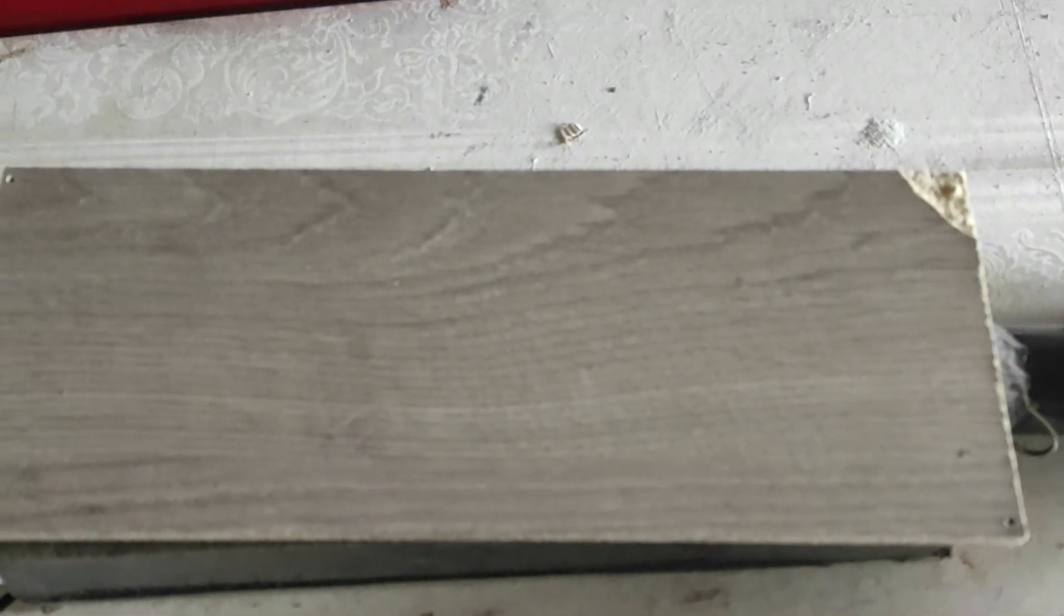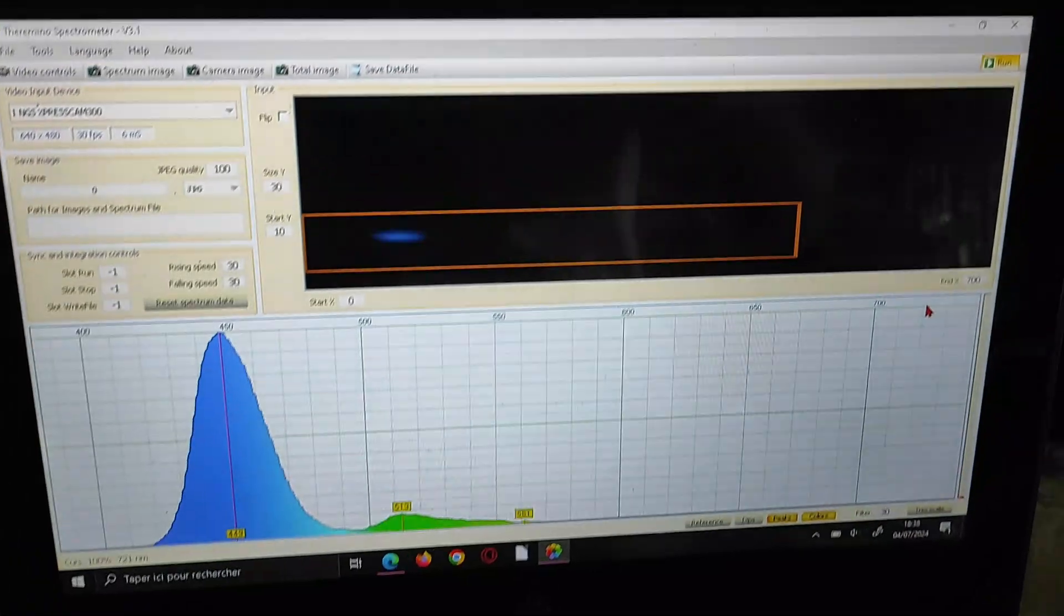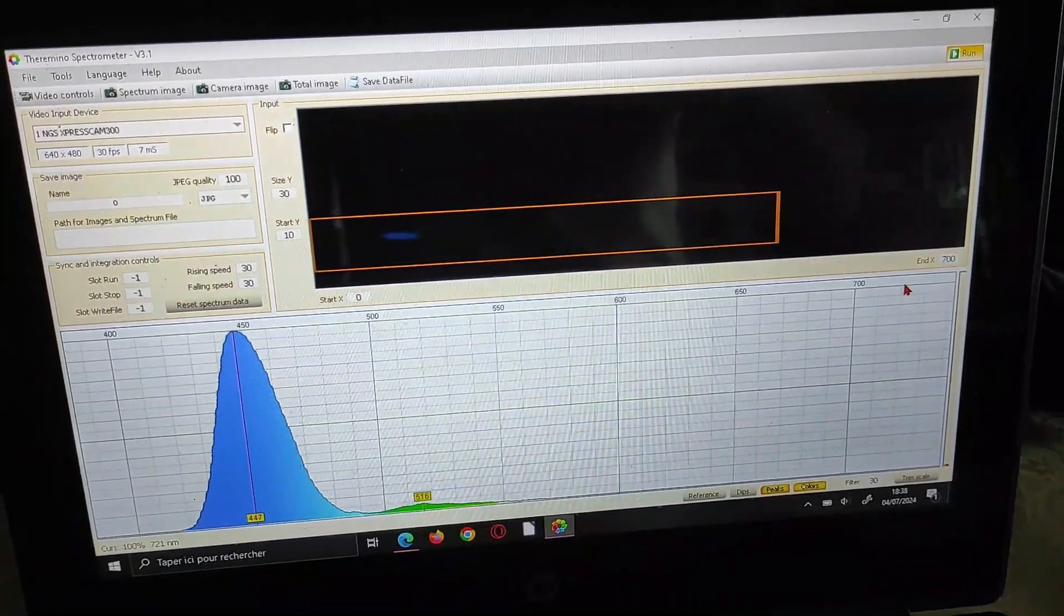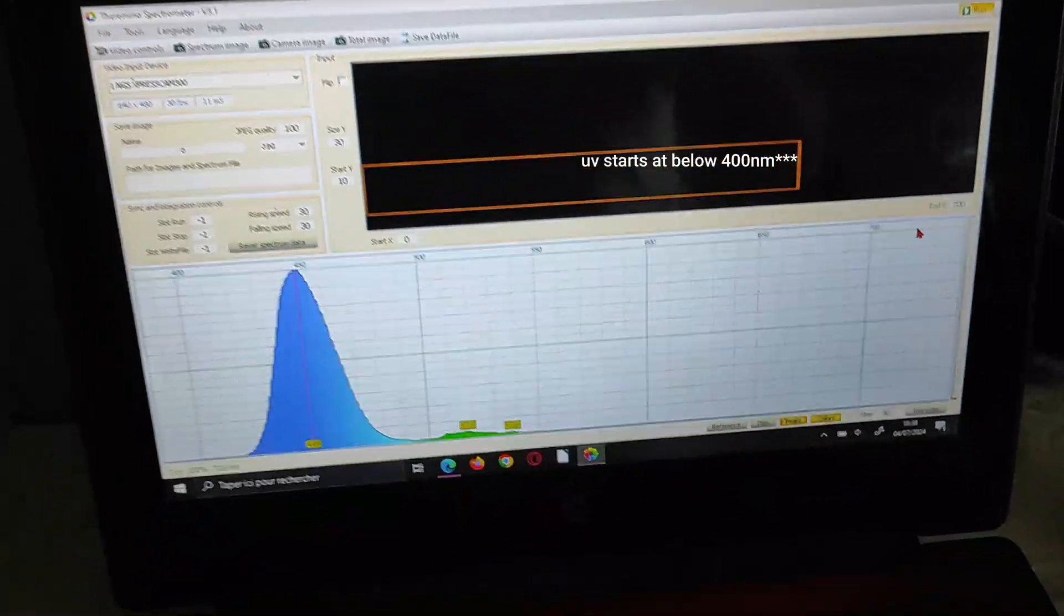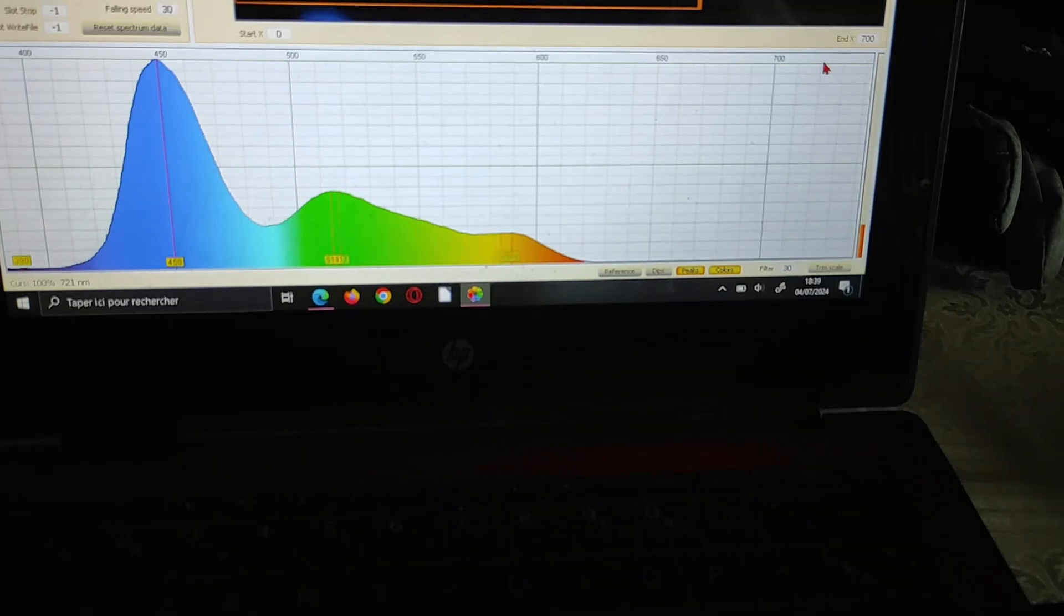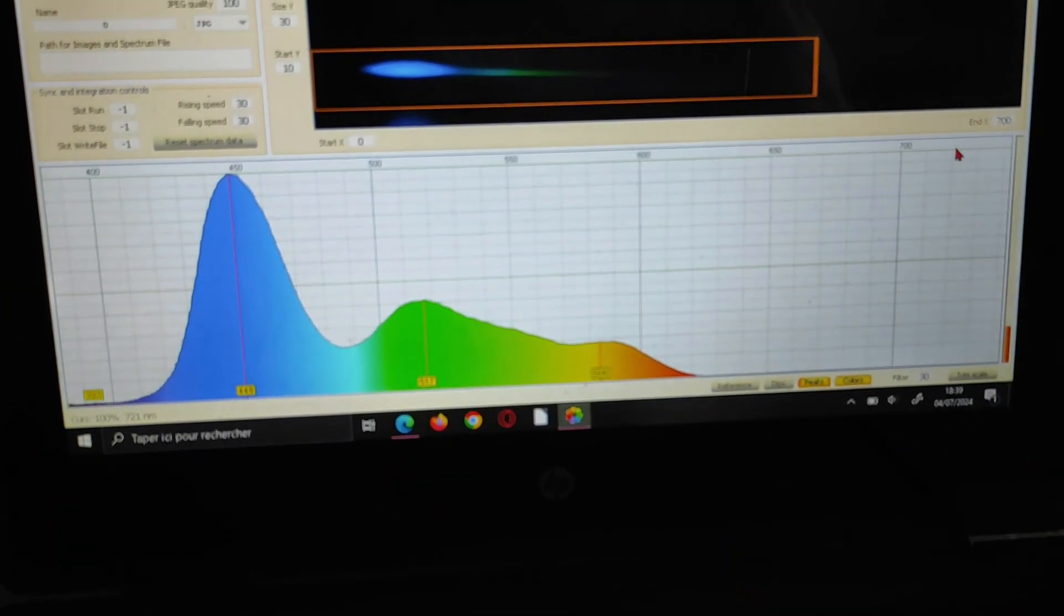Once we put it through the spectrometer, we can see that the light emitted is dark blue at 515 nm, which is not UV light yet. We can also observe some green light and a tiny bit of orange that manages to pass through the filters.